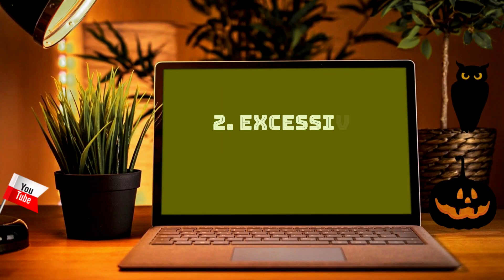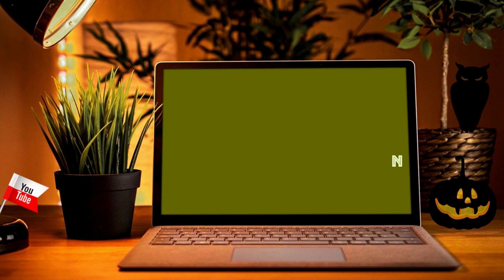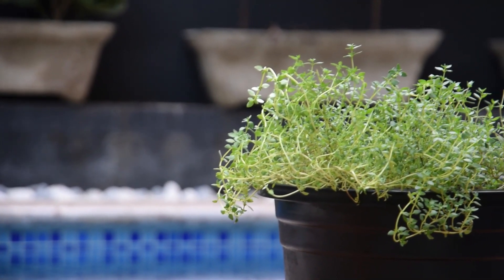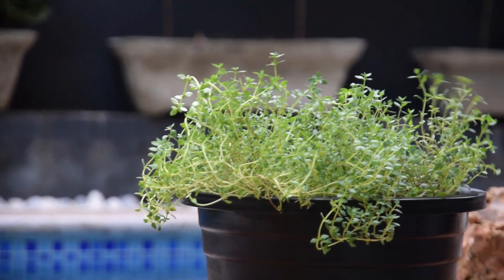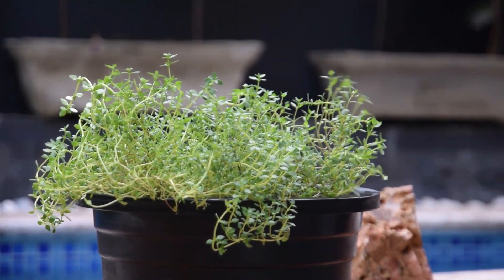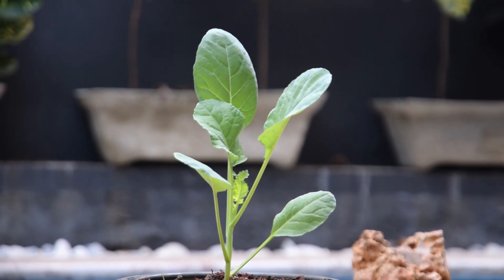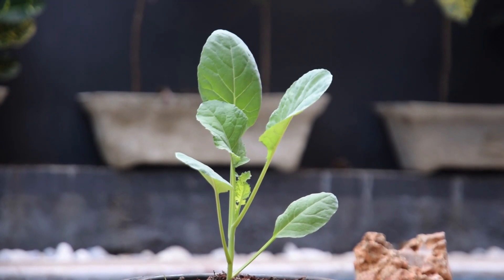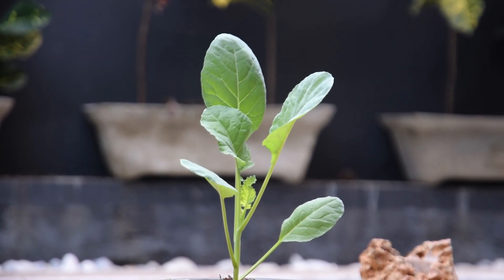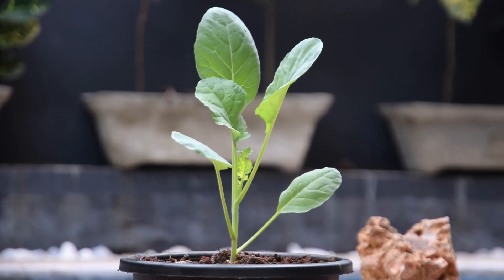Number two: excessive vegetative production. Don't let lush overgrowing leaves fool you, as excessive foliage production is the clearest sign of nitrogen toxicity in most plants. If it's a flowering plant, it won't bloom at all. If it's an herb, it won't be that flavorful.